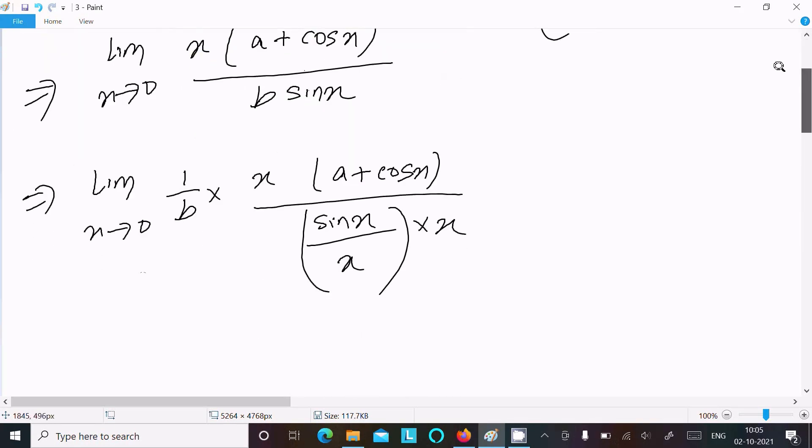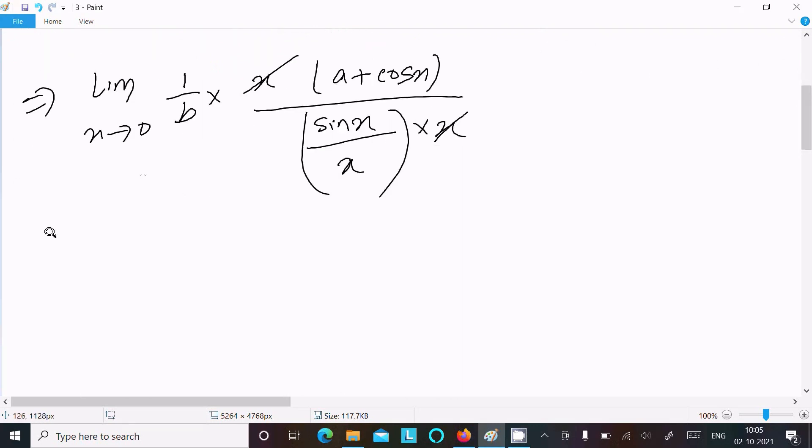So now the x cancels. After that, b is the constant, so we have 1/b.